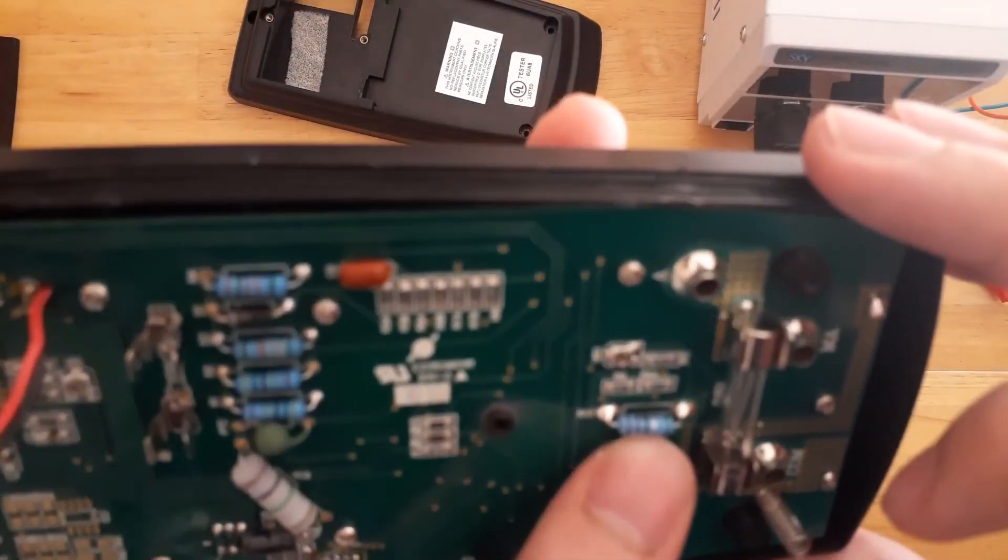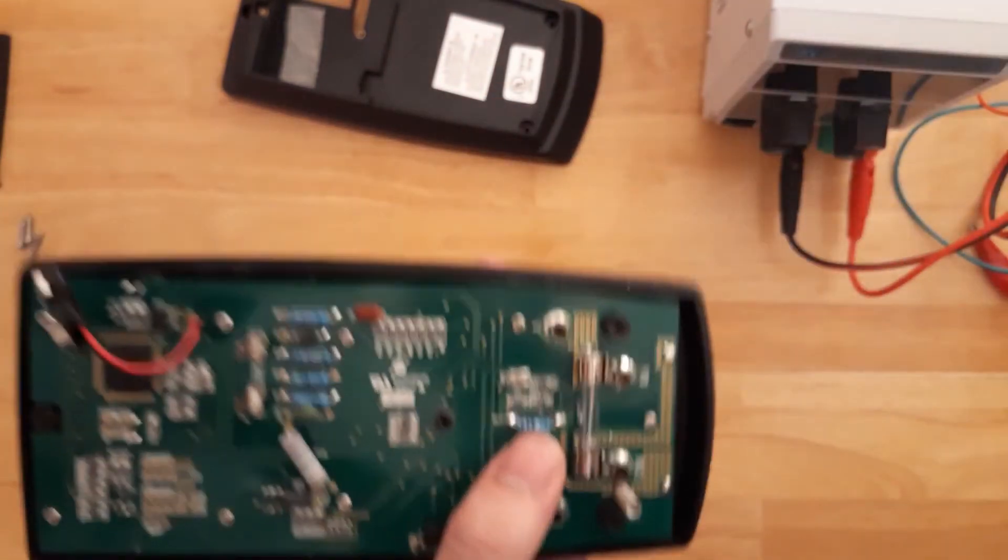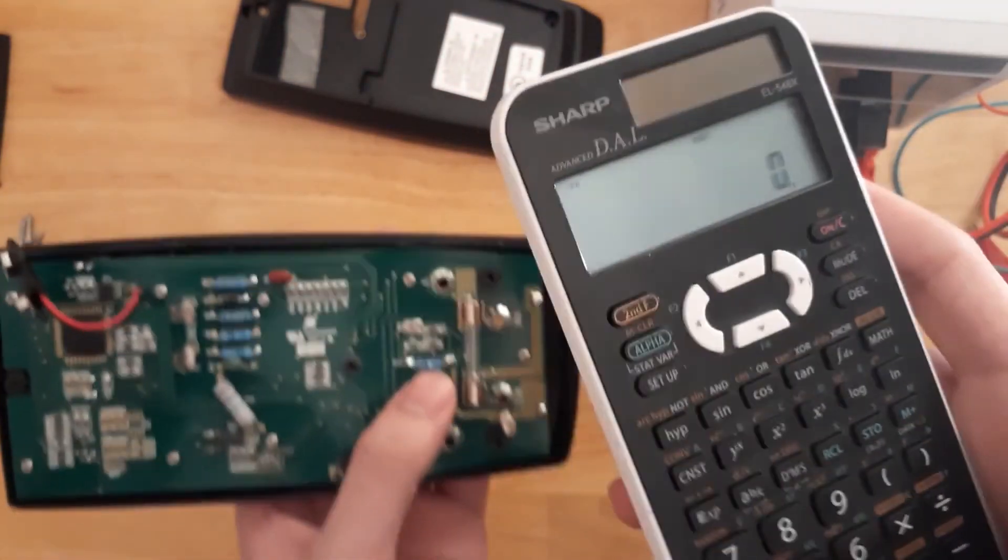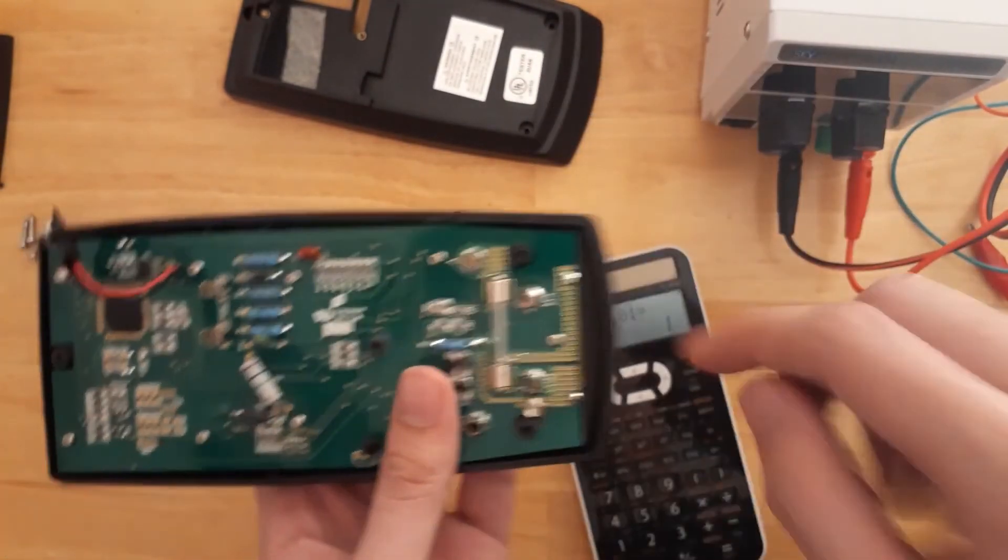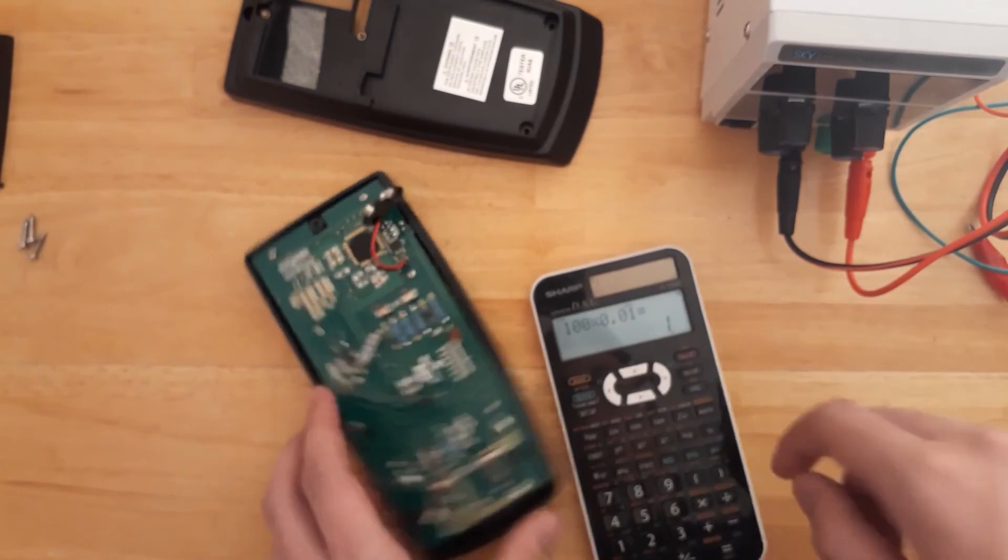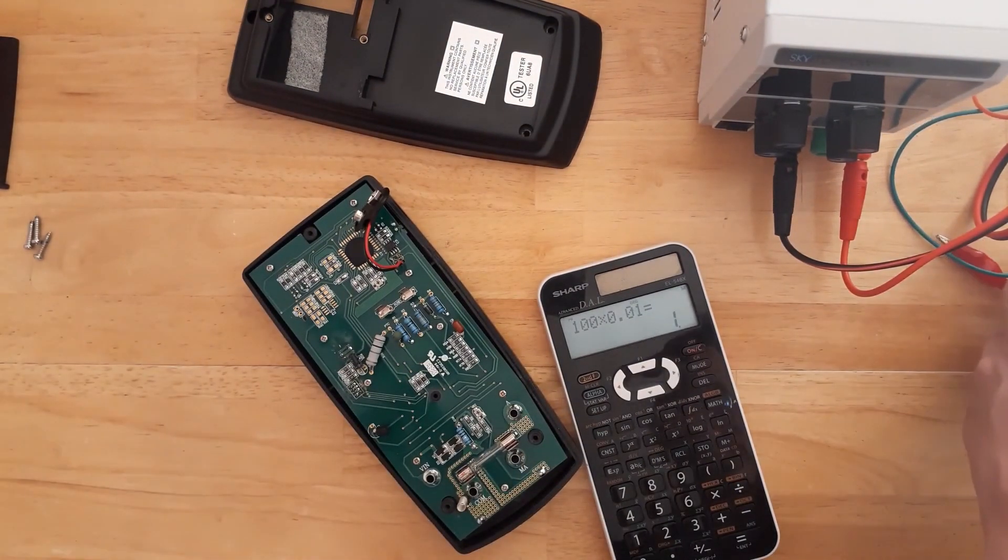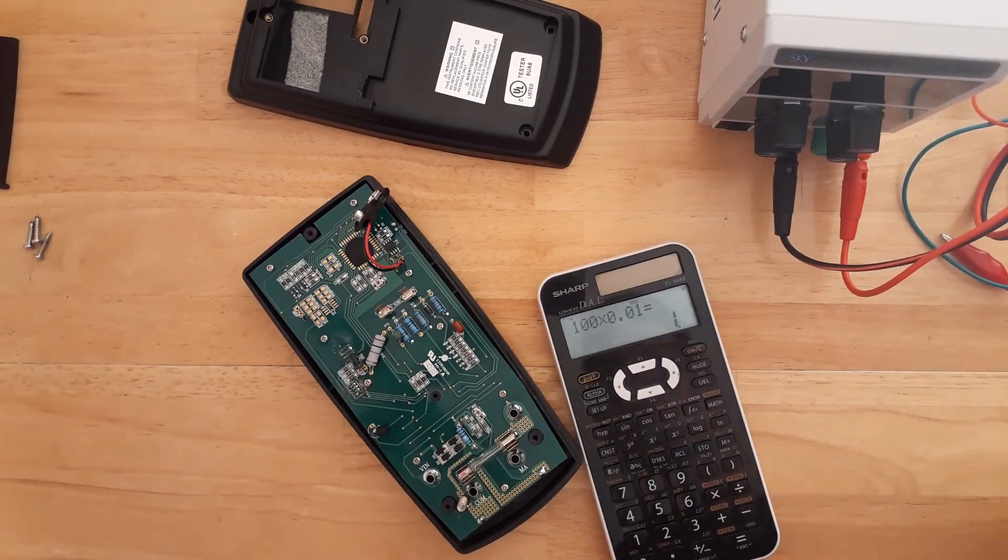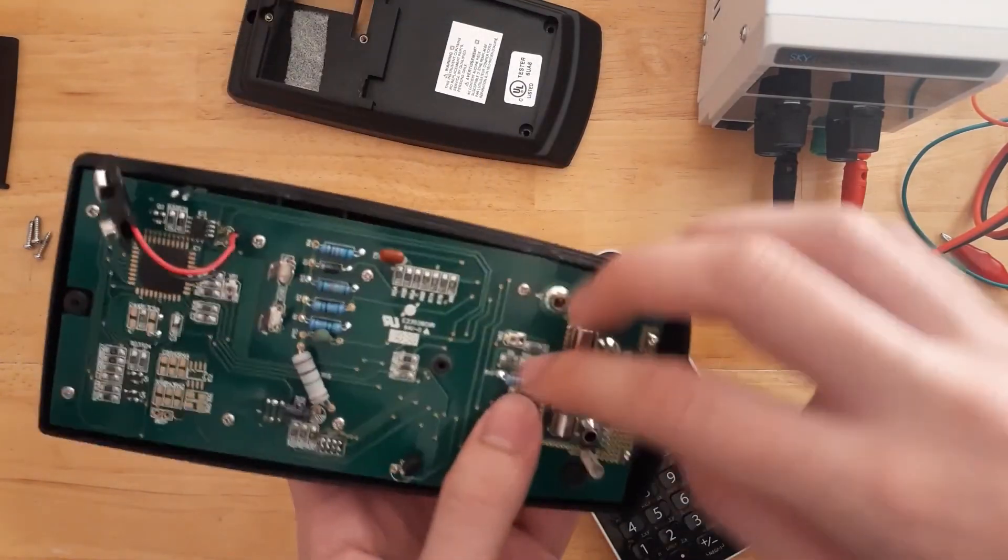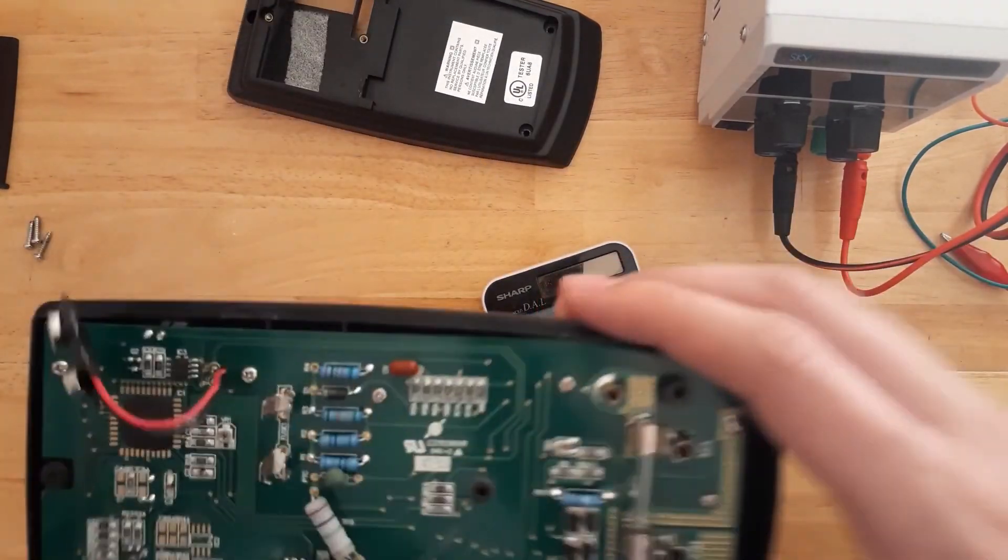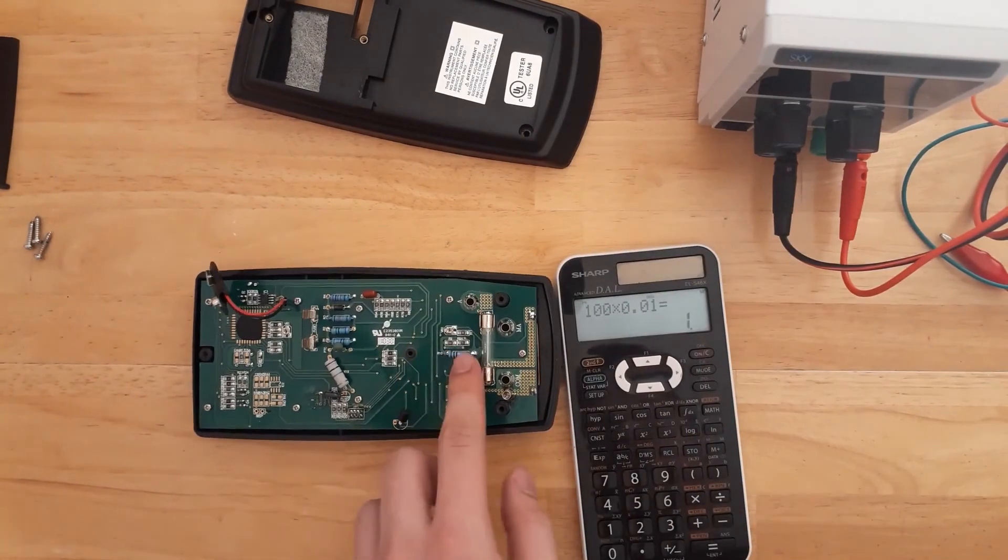The color code is brown, black, black, black, silver. So that is 100 times 0.01 I think. Yeah, this is just a 1 ohm resistor. Let me just check about that silver. Okay, yeah, so it is a 0.01 multiplier, so it is a 1 ohm resistor.